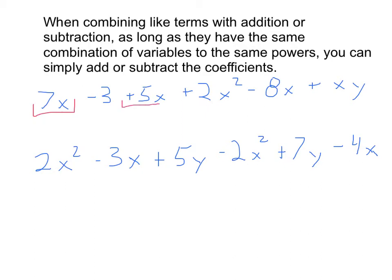Well, here we can see that this is a 5x. We want to make sure that we do include this sign that's out in front so we know what to do. And here we have a negative 8x. So if we combine 7x plus 5x, we get 12x, and then 12x minus 8x is going to give us 4x.